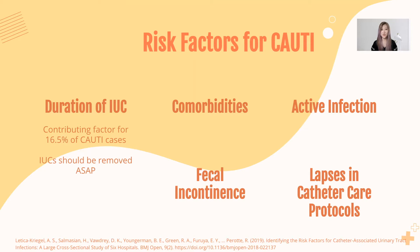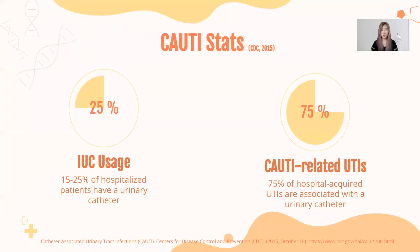Other risk factors include comorbidities, active infection, fecal incontinence, and lapses in catheter care protocols. According to the CDC, about 15% to 25% of all hospitalized patients have a urinary catheter, meaning all these patients are at risk for developing a CAUTI. 75% of all hospital-acquired UTIs are associated with urinary catheter use.